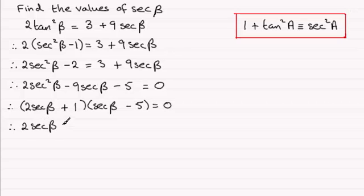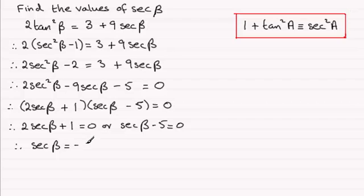So that means then that each of these factors could be equal to 0, so 2secβ plus 1 could equal 0, or secβ minus 5 equals 0. And this leads to rearranging this one. If I subtract 1 from both sides and divide by 2, secβ will equal minus 1/2, or secβ will equal 5 if I add 5 to both sides.